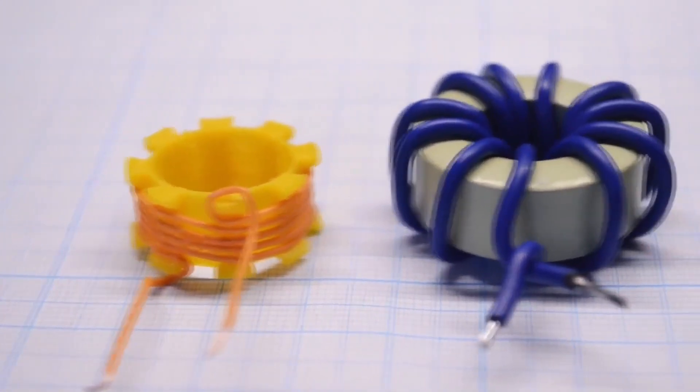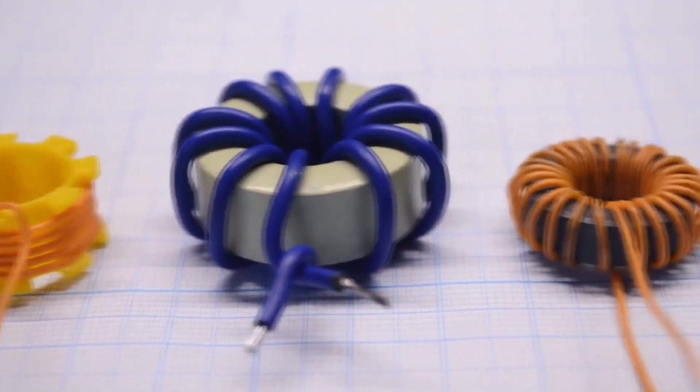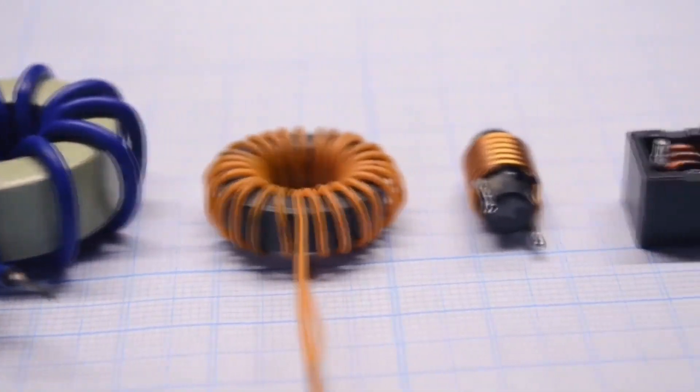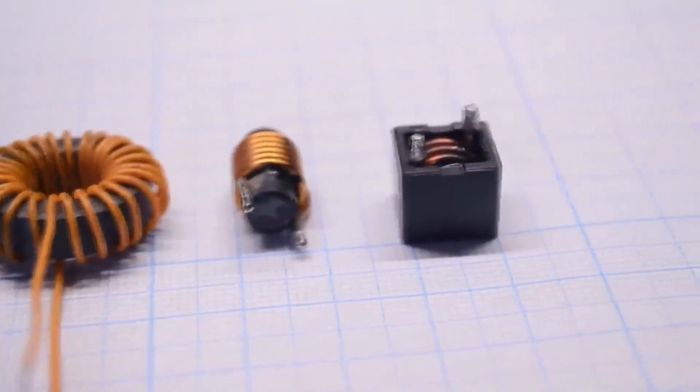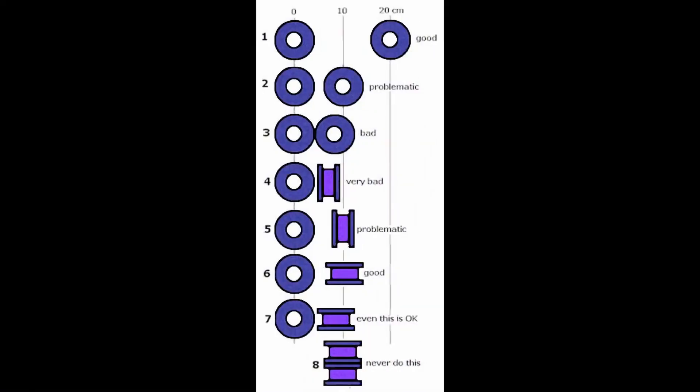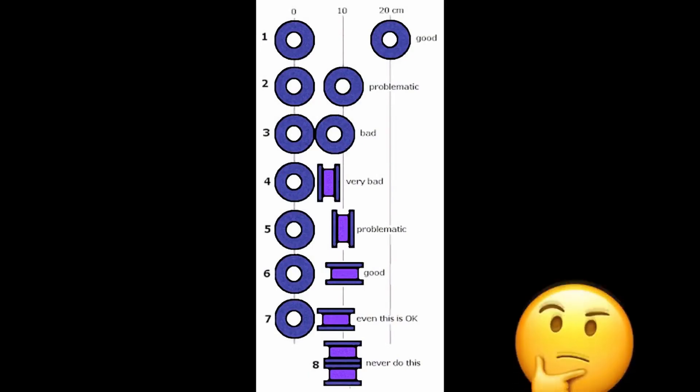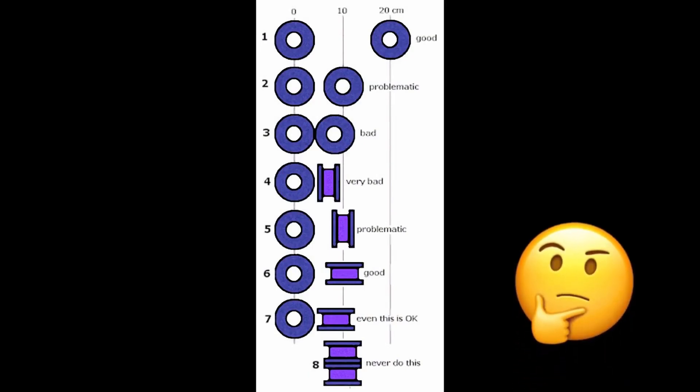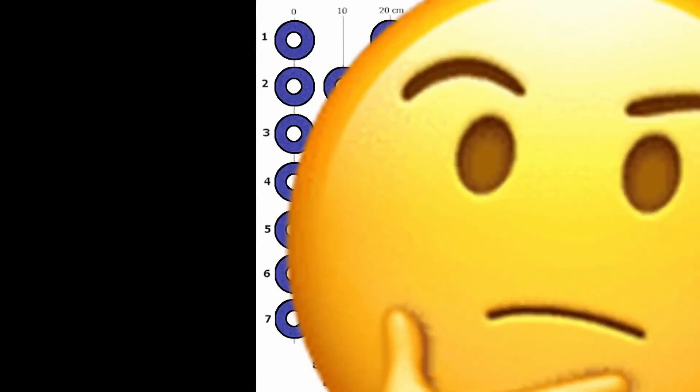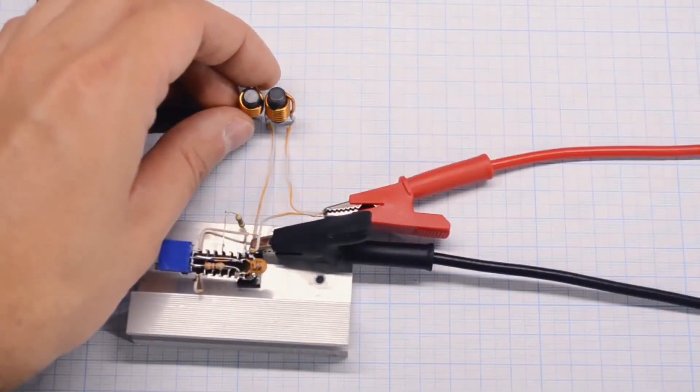Everyone knows well what an inductor looks like. There are surface mounted coils, through hole ones with cores, without cores of various shapes and sizes. While browsing the internet, I came across an image that roughly shows how to place inductors on a board relative to each other. In this video, I want to take a closer look at this aspect.